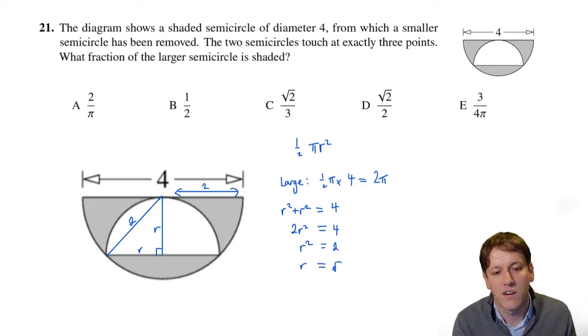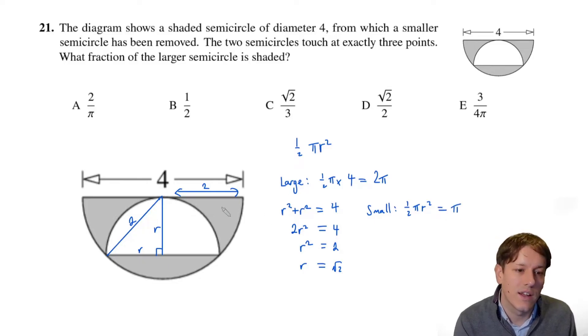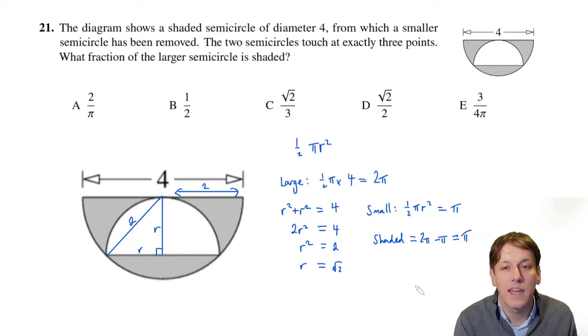You could go on to write r equals the square root of 2 if you want to, but in fact to work out the area of the smaller semicircle we just need to do a half times pi times r squared, so I just need r squared really. So 2 times a half here gives us 1, and so that is pi. And so the area of the shaded part is just 2 pi minus pi, which is pi, and we want the fraction of the larger semicircle that's shaded, so that's pi out of 2 pi, which is 1 half, and so the answer here is b, 1 half.